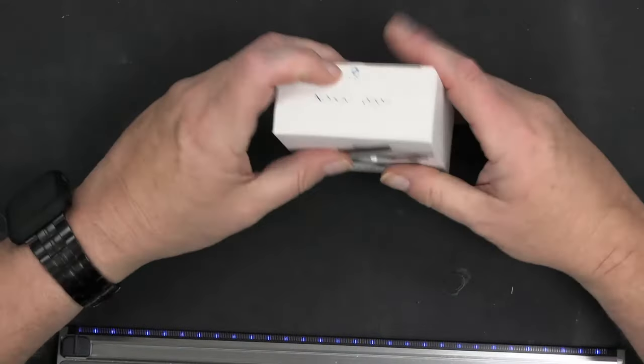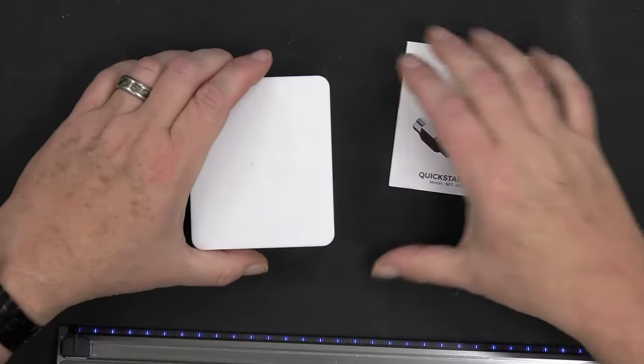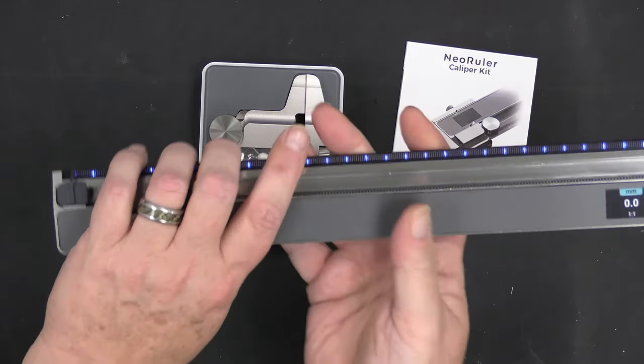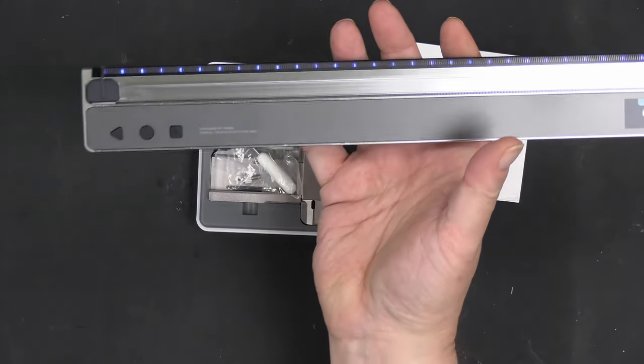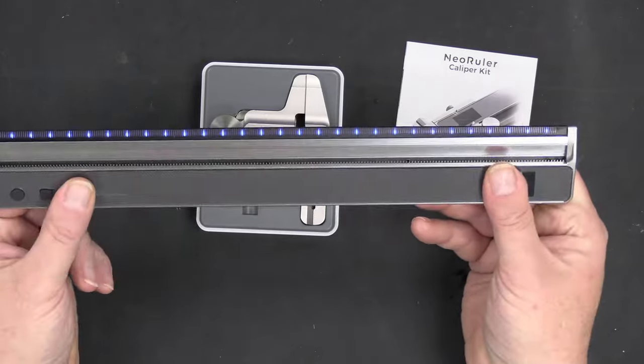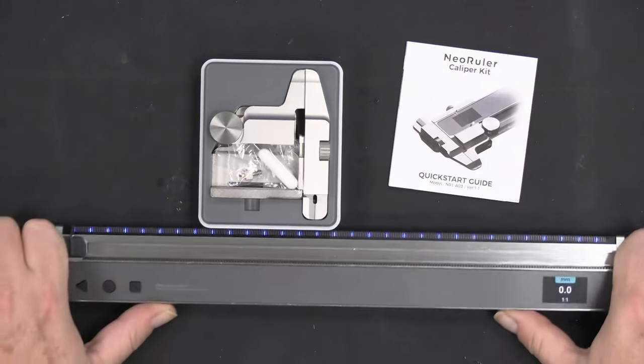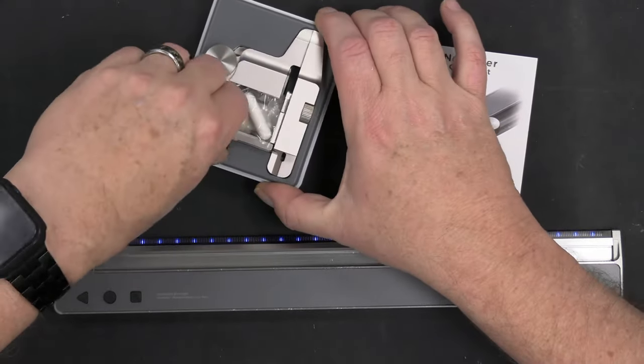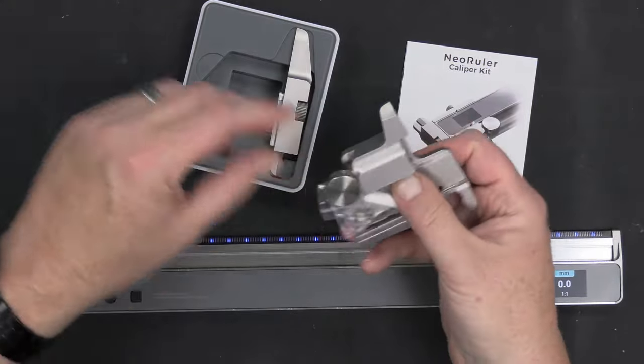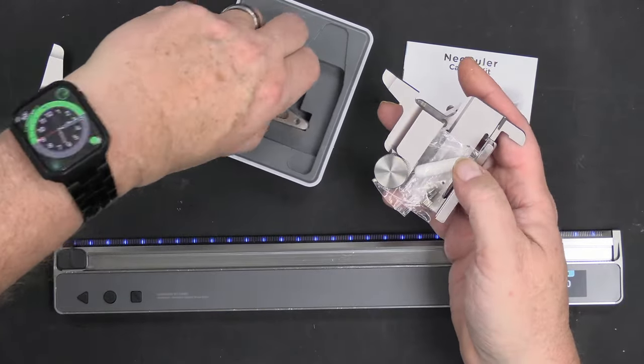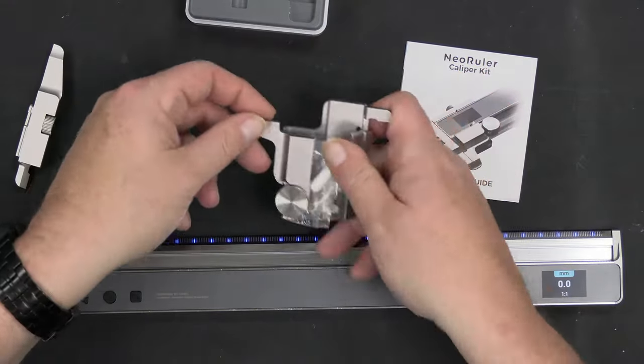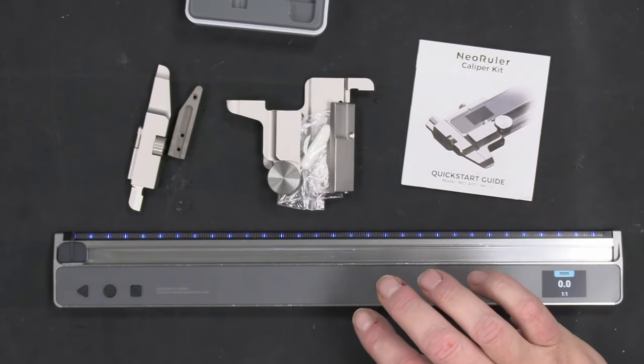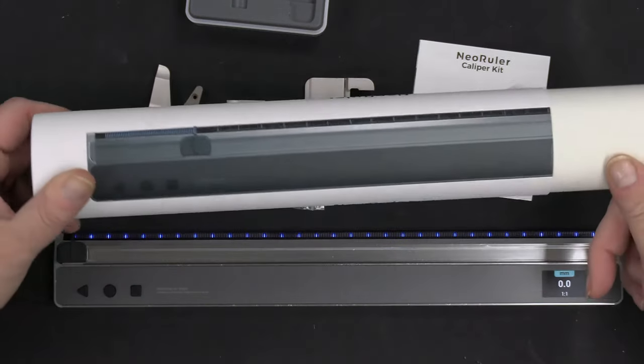I received along with this a caliper conversion kit so you can actually turn this into a caliper. Let's go and put the calipers on. First thing we'll do is get this out of the box. Nice little manual. And again, this is really a nice, well-designed, beefy ruler. This is really nice. And the same with these calipers - really high grade milled aluminum and it is just nice.